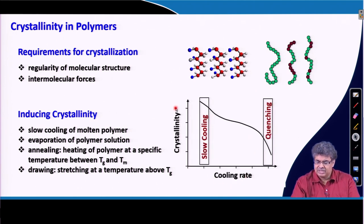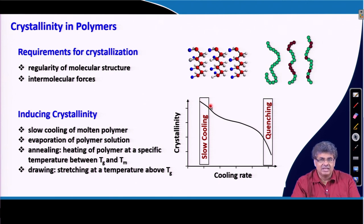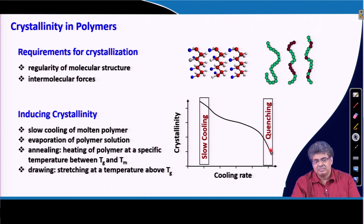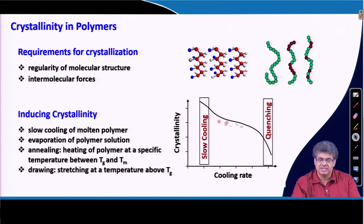This shows how crystallinity varies with cooling rate. If we cool a polymer melt slowly, the crystallinity will be higher because we are giving more time to the polymers to rearrange and align. But if we quench the polymer — as in injection molding or extrusion, cooling very fast — we are not providing enough time, so the extent of crystallinity is much lower. So, slowing the cooling process of polymer melt induces more crystallinity in the sample.